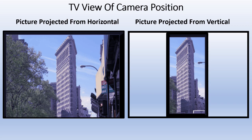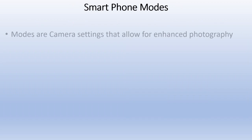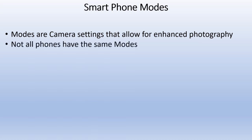Camera modes are settings that allow for enhanced photography — you can do a lot more than just a standard picture. Not all phones have the same modes. iPhones and iPads will generally have very similar modes depending on the version. Android can be all over the map because there are over 300 manufacturers. Some include many more modes than others, but what manufacturers have enhanced most over the last few years are the cameras.